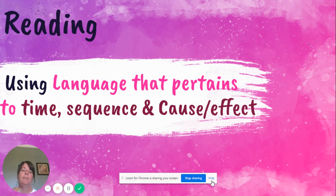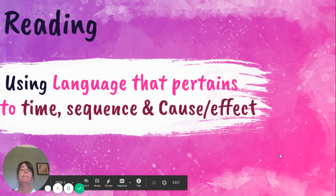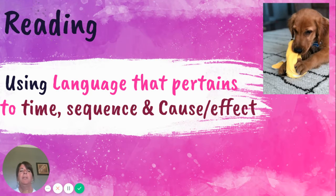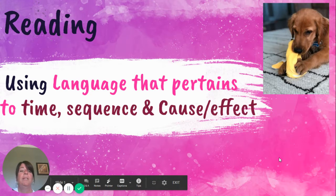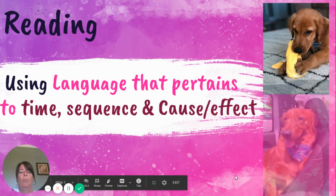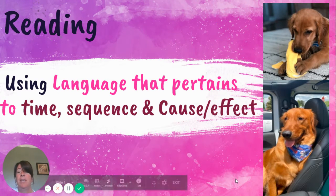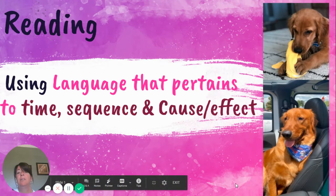Not too long ago, I got a puppy, and his name's Baxter. We got Baxter for Christmas when we went back to New York. In this picture, Baxter is about three months old and he's eating his banana toy, which he loved very much. This next picture was taken just last week — Baxter is now a year and a half. So when we think about time and the language that goes along with time, like clocks, years, dates — that's language that pertains to time.